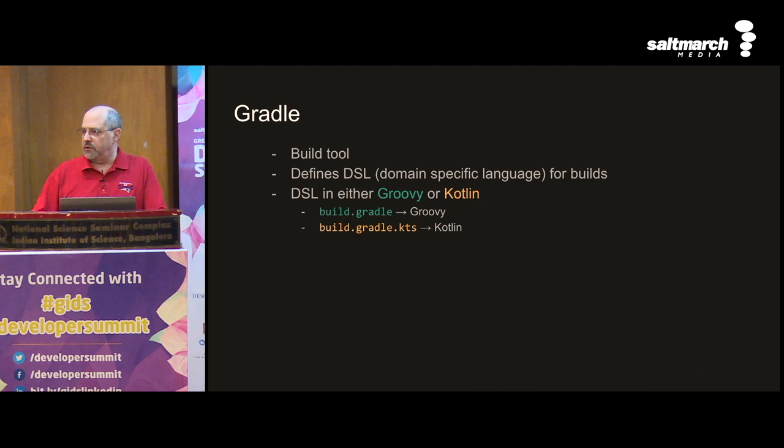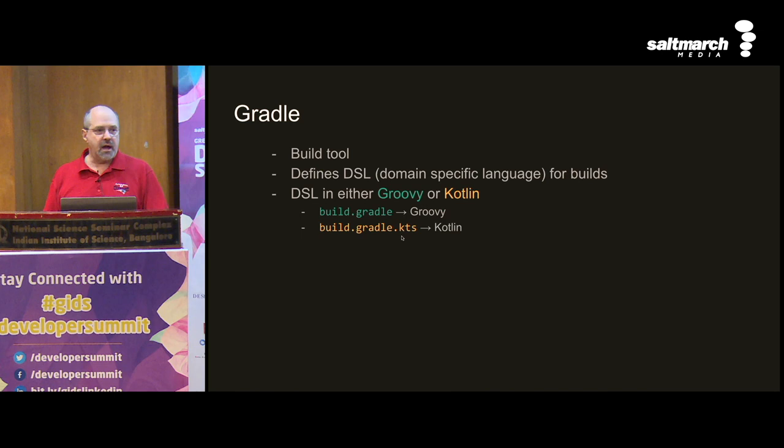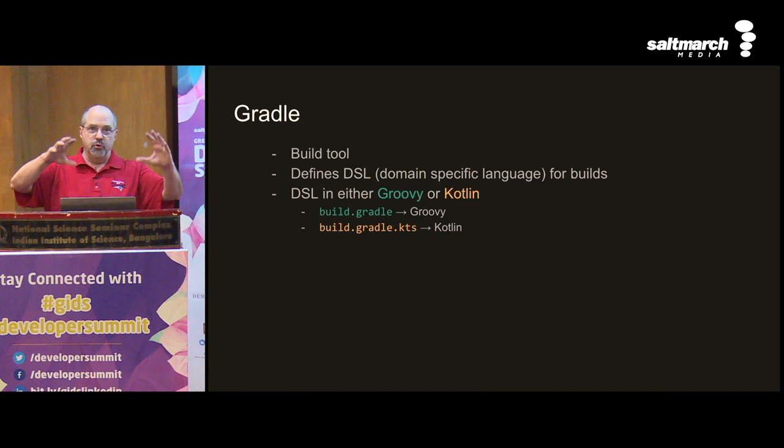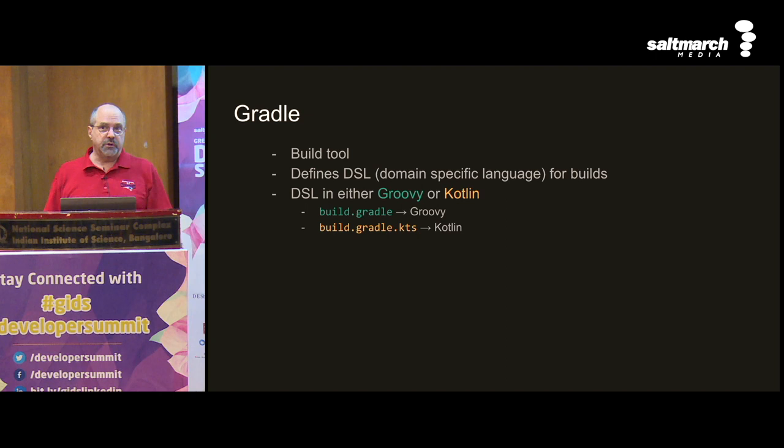How do you know whether a project is using the Groovy DSL or the Kotlin DSL? The name of the build file is technically arbitrary, but if it ends in .kts, you're using the Kotlin DSL. If it doesn't end in .kts, you're using the Groovy DSL. You can mix them on a project-by-project basis — like Groovy at the top level and Kotlin in an inner project of a multi-project build. I wouldn't recommend it, but it would work.